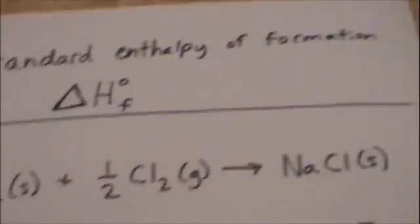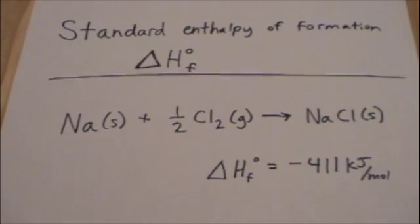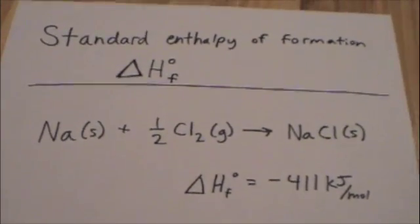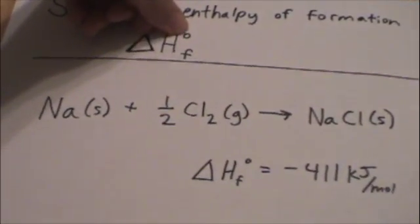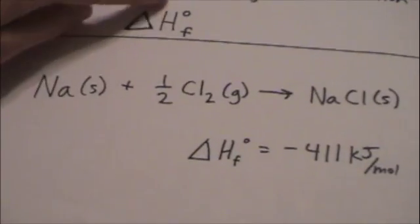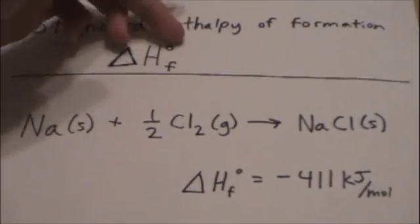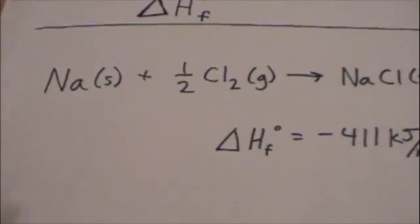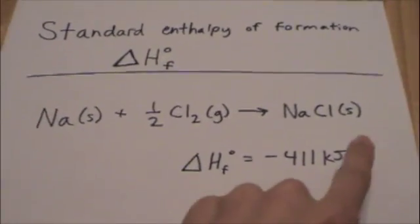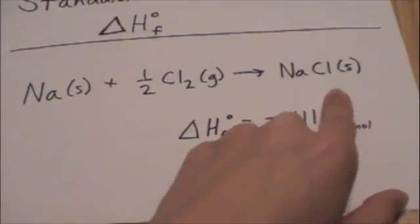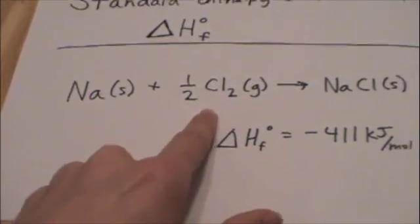Finally, we need to understand the standard enthalpy of formation, which is something we can look up on a table. The little circle symbol means standard — so it's at a given temperature and one atmosphere, meaning standard state. The little f for formation means you're forming one mole of a substance from the reference forms of its elements in their standard states.